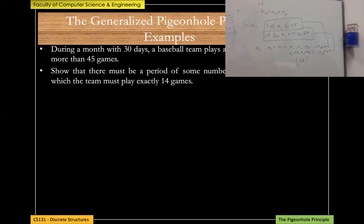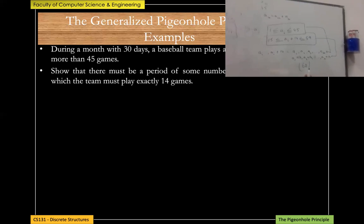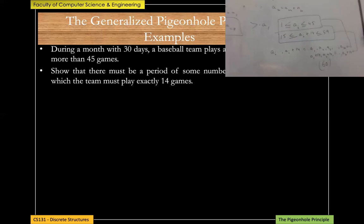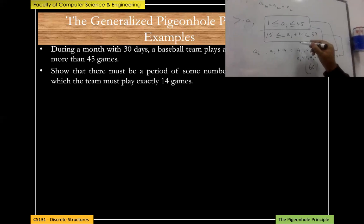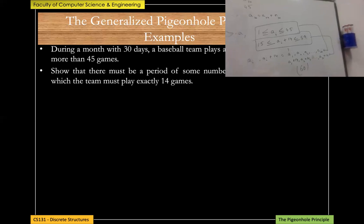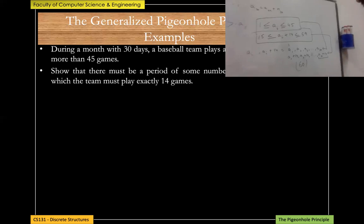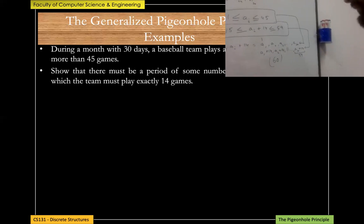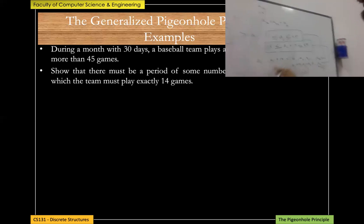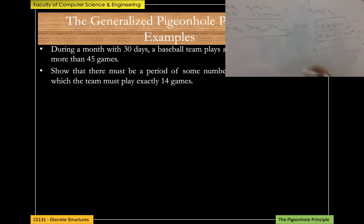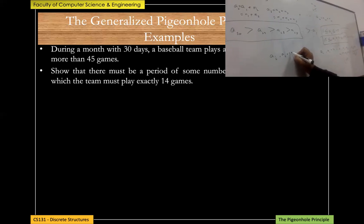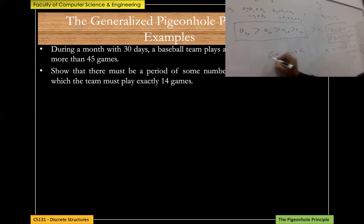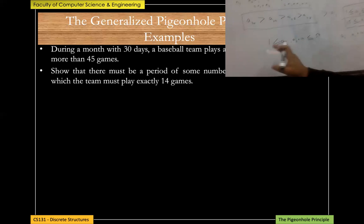This is exactly what we needed to prove. The key insight: we used a cumulative sum as a strictly increasing sequence, added 14 to get a second sequence, and applied the pigeonhole principle to find that two values must be equal — showing a consecutive period of exactly 14 games exists.